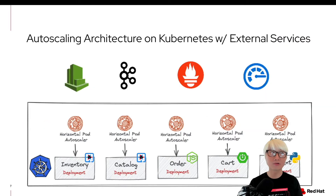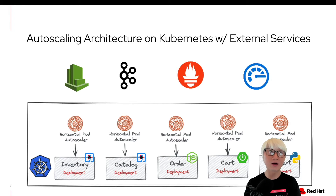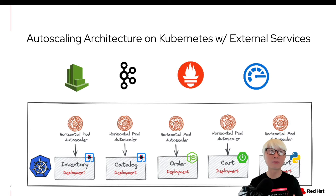First of all, if you didn't watch the first use case, I encourage you to find the first use case video on how to build your event-driven application for autoscaling on Kubernetes with HPA and a Kafka cluster. There you can understand the background — why we think about autoscaling and how Kubernetes autoscaling architecture looks like. So this is the second video once again.